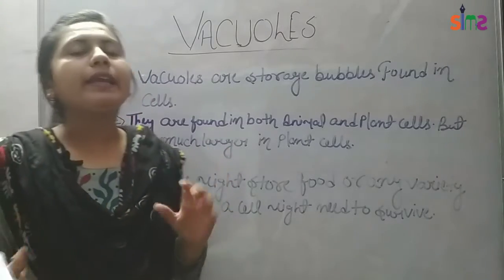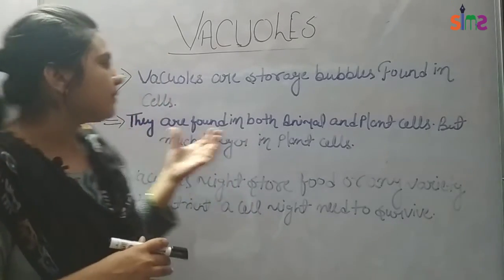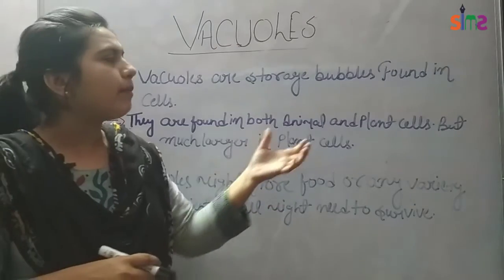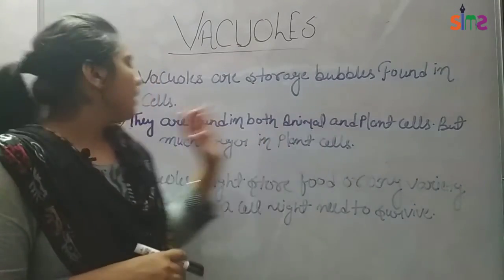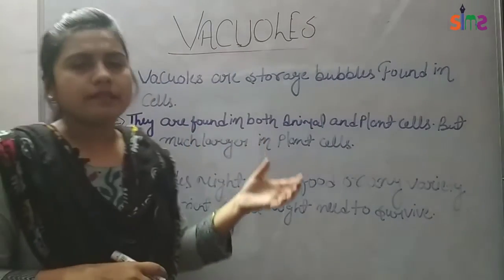Now, where are these vacuoles present? They are present in both types of cells — animal and plant cells. But they are much larger in plant cells.